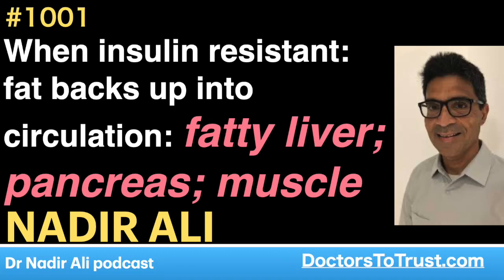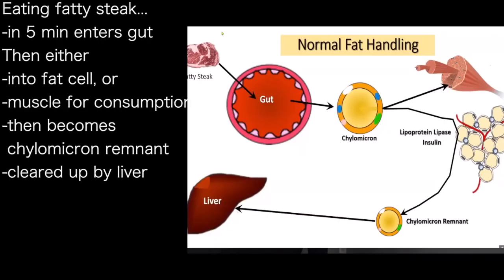We are eating fat into the gut. And you'd be surprised — in healthy people, that happens in a period of five minutes after fat enters into the circulation. Once it's dumping the fat into the fat cell, or giving fat to the exercising muscle — the muscles we have in our body for consumption, or to store for future consumption — it becomes much smaller, and it's called a chylomicron remnant.